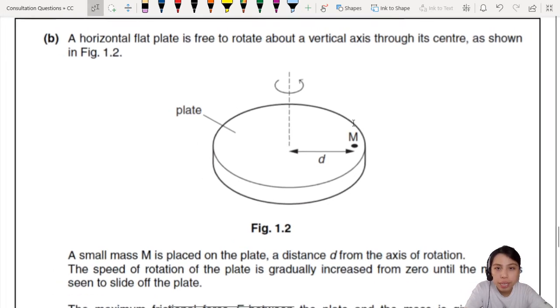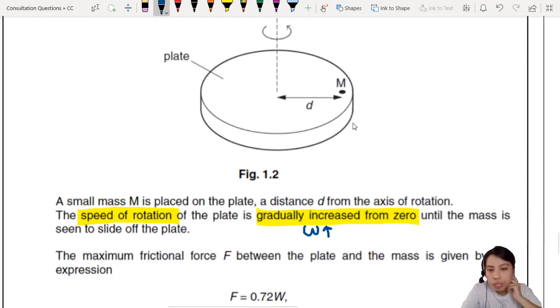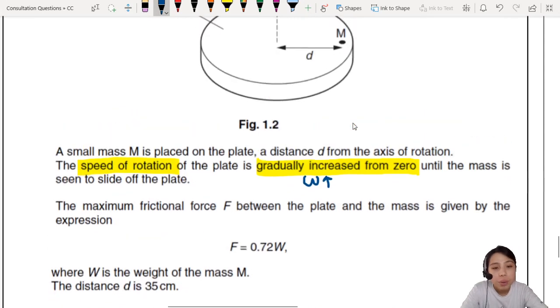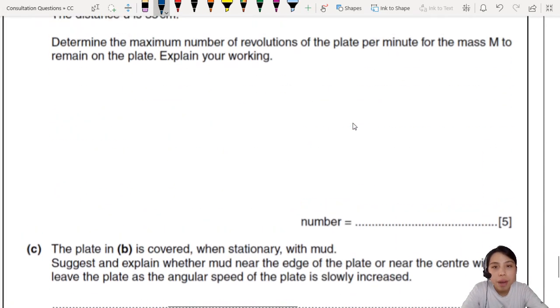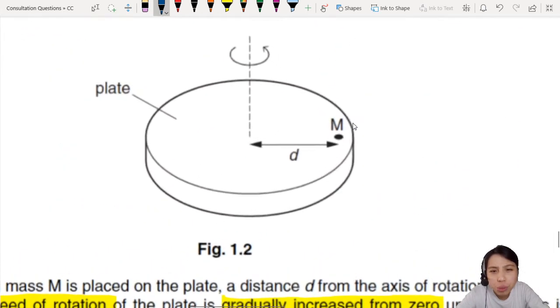A horizontal flat plate is free to rotate about a vertical axis. Small mass on the plate, distance d. The speed of rotation is gradually increased from zero until the mass starts to slide. Your angular velocity is actually increasing. Maximum frictional force is this equation.